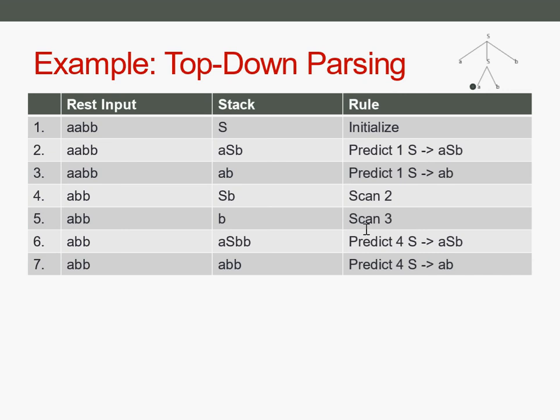On line four, it can try both rules again. Exchanging S by ASB gives the first three symbols, and the B behind S is kept. Then it tries the other rule, exchanging S by AB. Now the rest input and stack are the same.